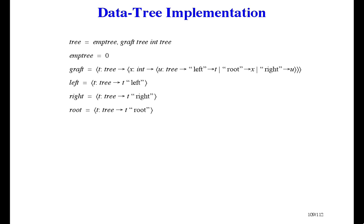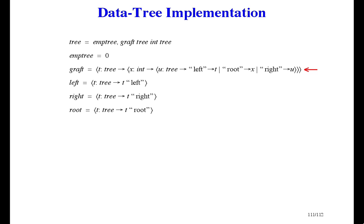Here's another way we might implement trees, just to show that there's more than one way to do it. The empty tree is the number zero, and graft makes a record, or structure, or object, with three fields or attributes. In this implementation, our example tree looks like this. When formatted nicely, it looks like a table of contents, which is also a great example of a tree.